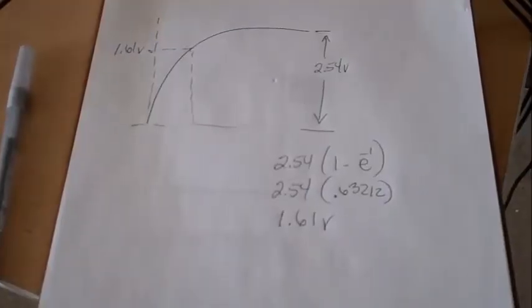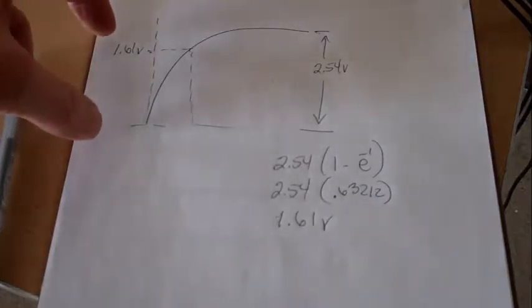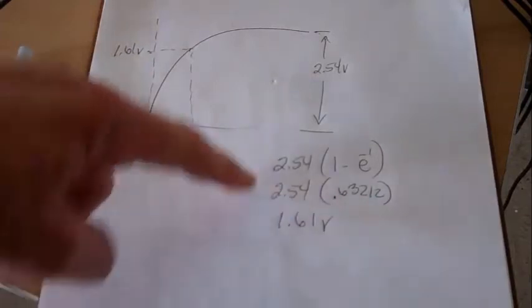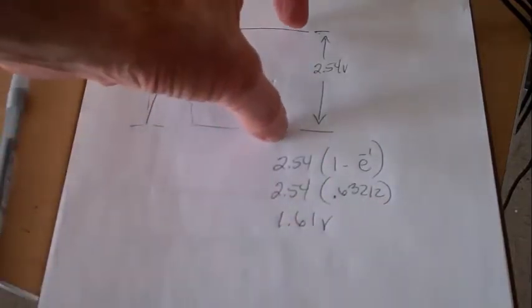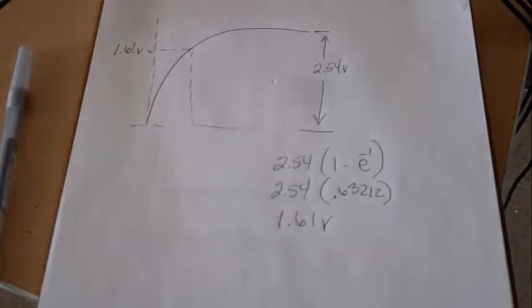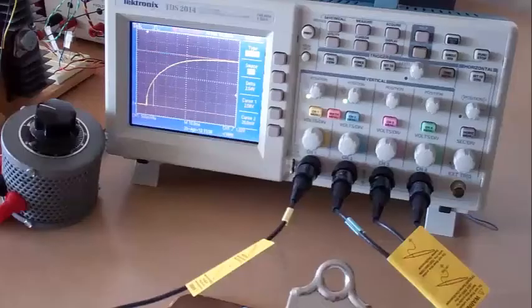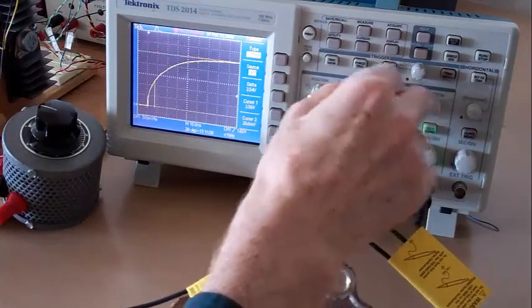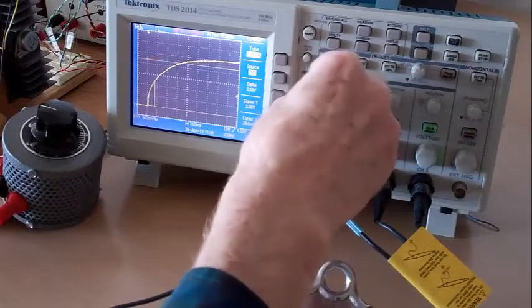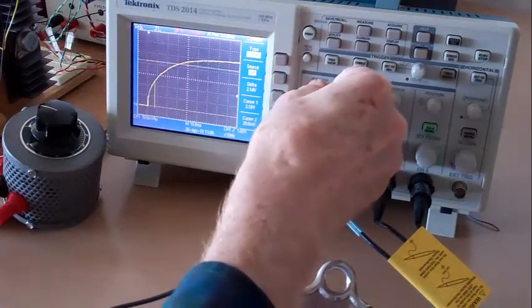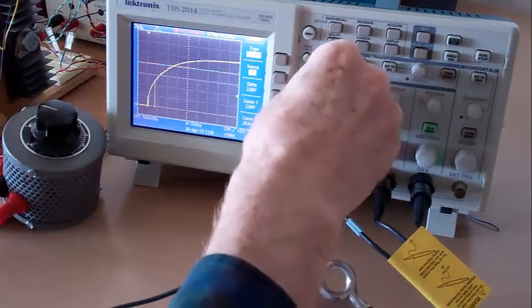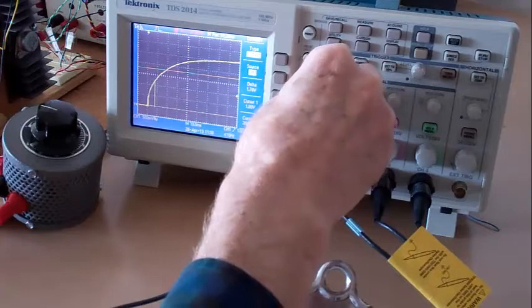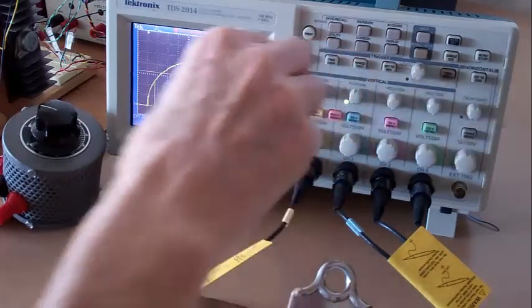Then calculate the voltage at the first time constant, which is 0.632 times that peak value. Then adjust the upper cursor to 1.632 times that voltage. In my case, it's 1.61. I'll use 1.62, that's the closest.